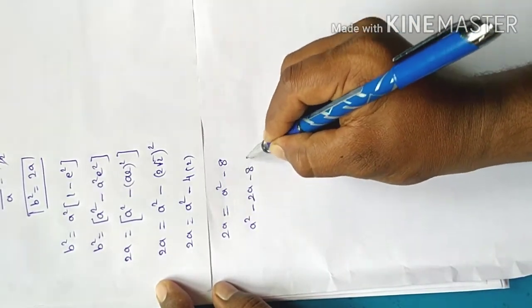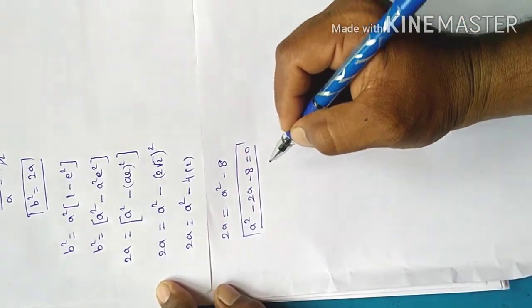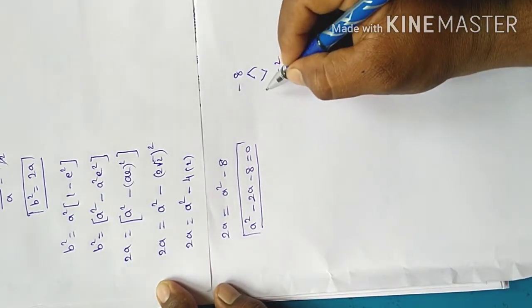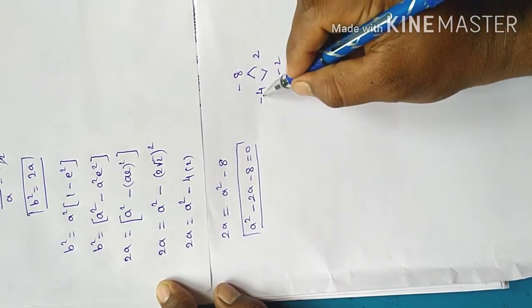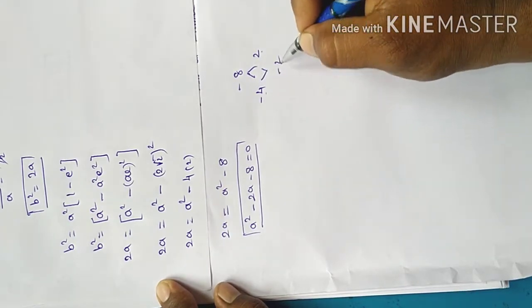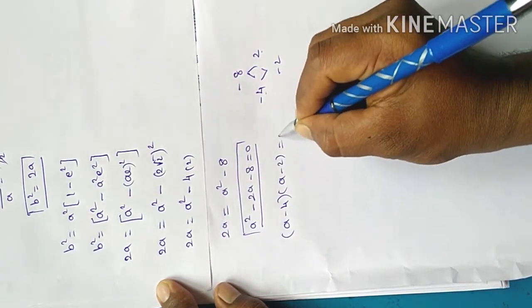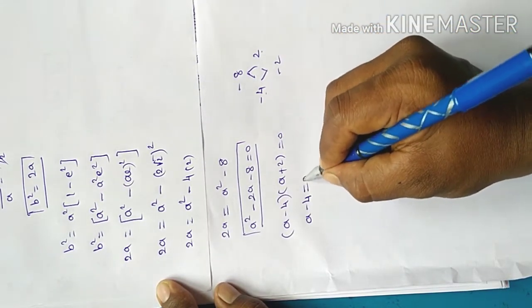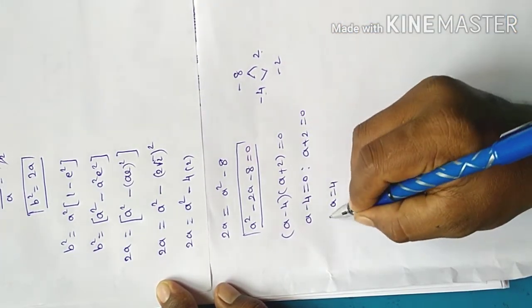Therefore a square minus 2a minus 8 equal to 0. By factorization method: multiply to minus 8, add to minus 2. So a minus 4 and a plus 2. Therefore a minus 4 equal to 0 or a plus 2 equal to 0. Since a is positive, a equal to 4.